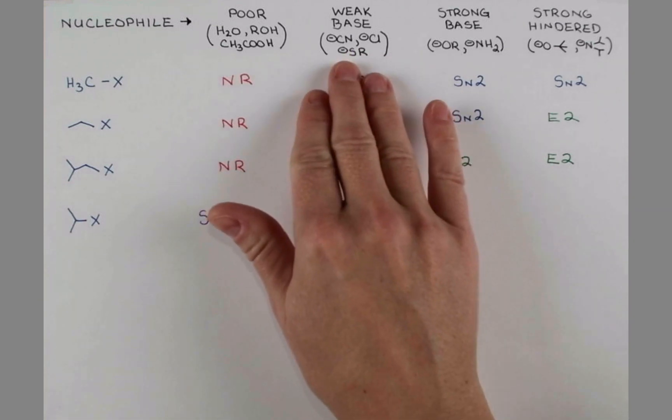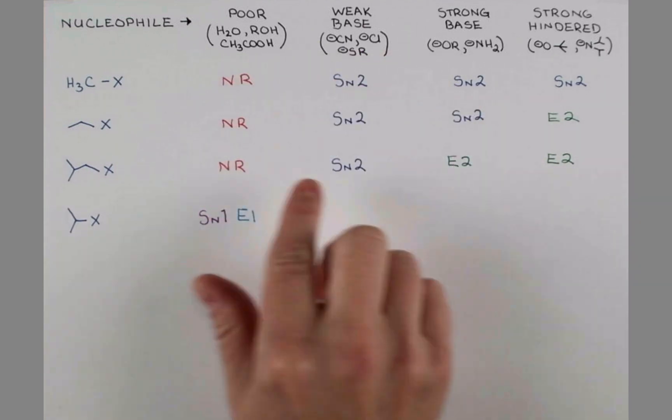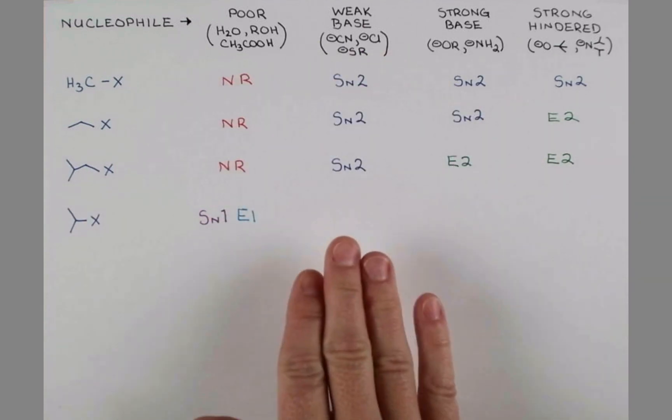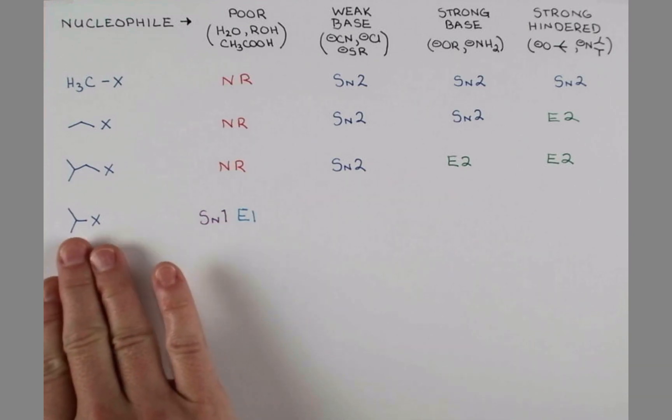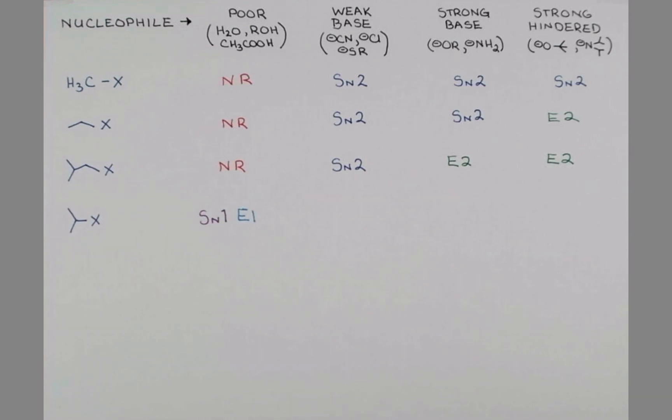Now, we add some negative charge, a little bit more pushing power into our nucleophile. And the main mechanism when we treat these with a weak base, our secondary substrates, is going to be SN2.